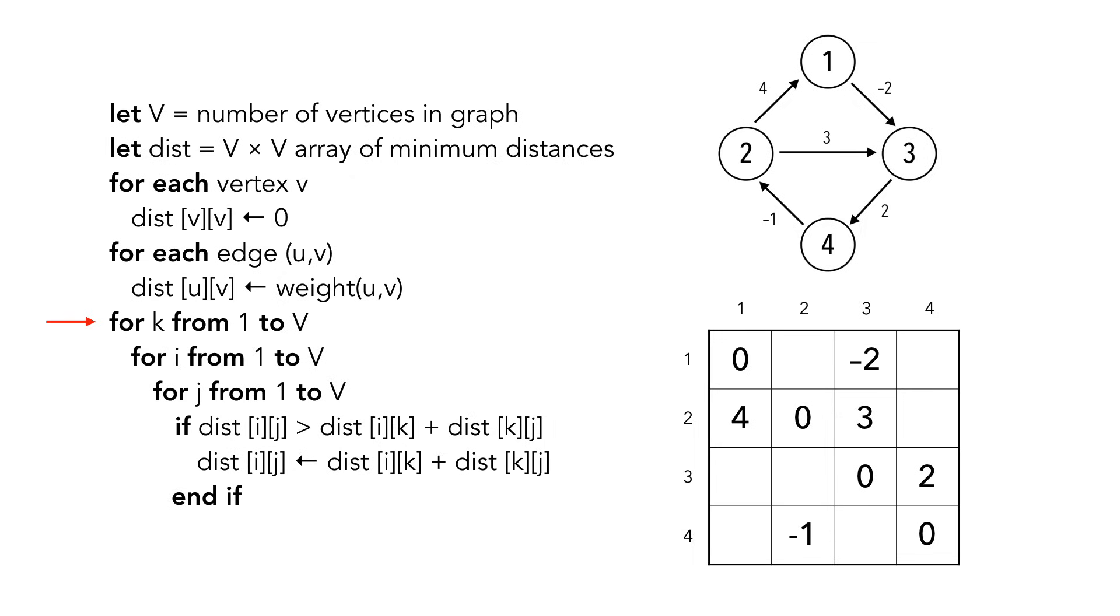We're ready for the meat of the algorithm, the nested for loop. I'll hide most of the pseudocode, as our main concern is the if condition and the three counter variables, i, j, and k.